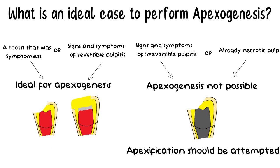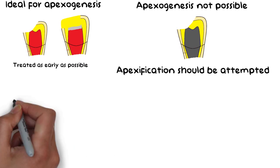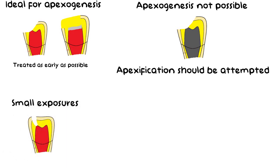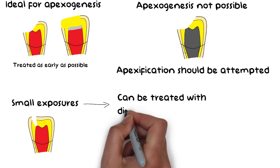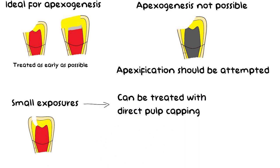I will be talking about Apexification in my later videos but let's just continue on Apexogenesis. It is also recommended that the exposure ideally should be treated as early as possible. A small exposure can be treated with direct pulp capping in which MTA is placed directly over the small exposed part, hence avoiding the need for Apexogenesis. But if the exposure is large then Apexogenesis should be attempted.